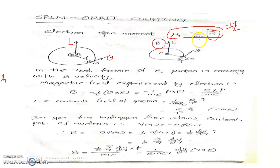So B = −(1/c)(v × E). Multiplying the velocity by the mass of the electron, this becomes B = −(1/mc)(p × E), where p is the momentum. This is equal to (1/mc)(E × p).